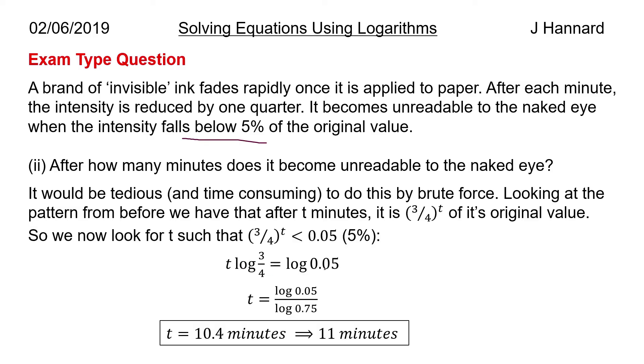Solve it like a normal equation, you get t equals log 0.05 over log 0.75, so t is 10.4 minutes. Therefore it's 11, the 11th minute where it becomes unreadable to the naked eye.